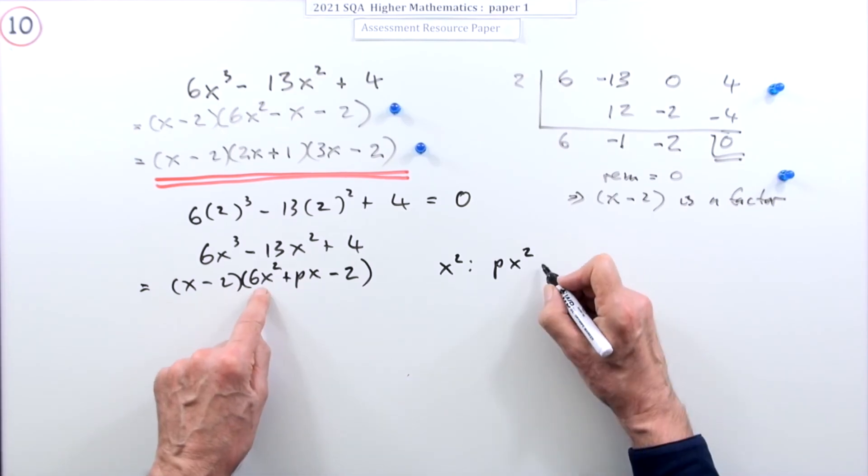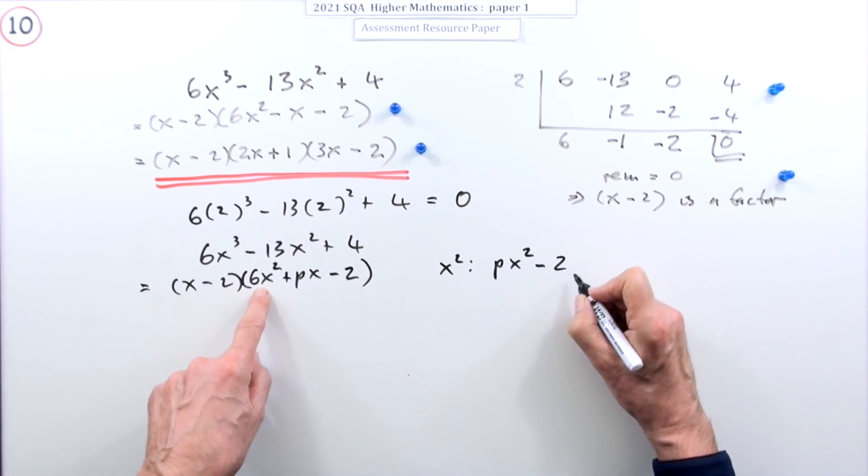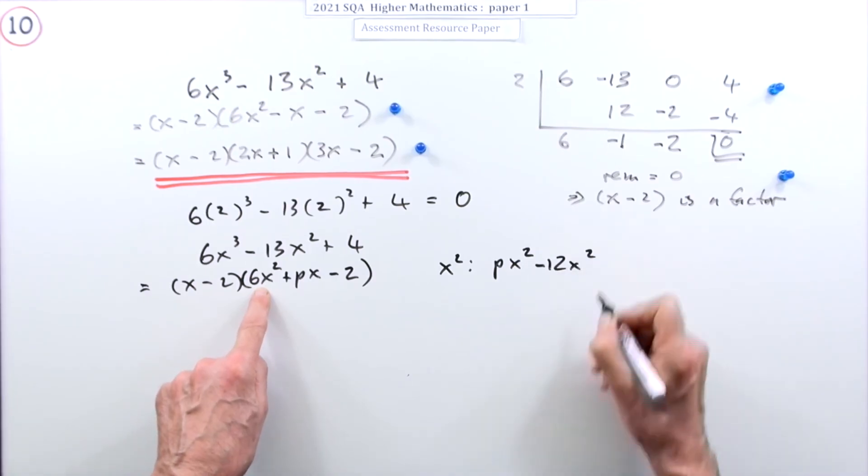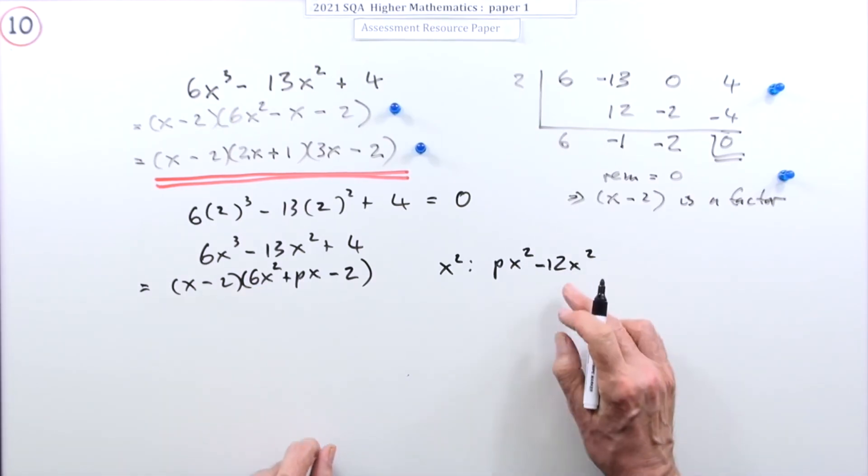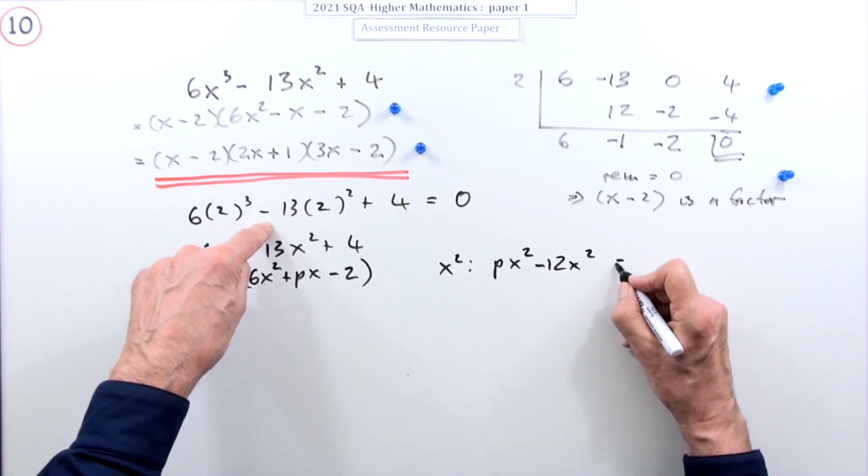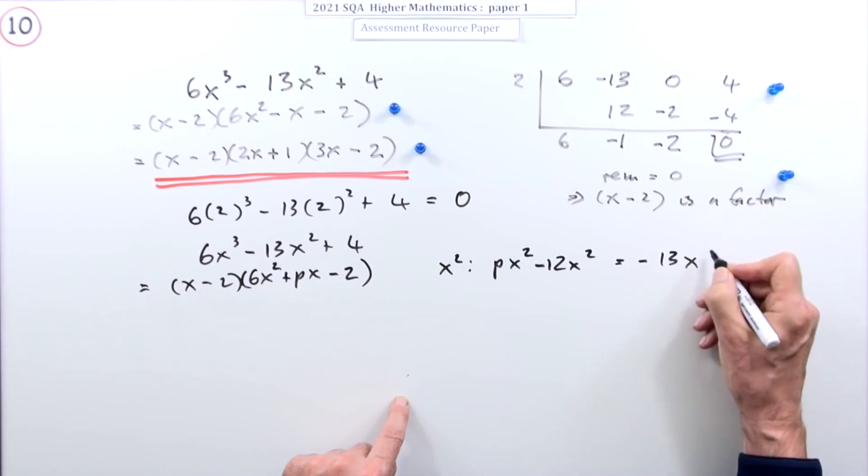Those are the two combinations that would give me an x² and that should come to negative 13x². Of course you didn't need to write in the x², you could just have said p minus 12 equals negative 13, which is what I'm just going to do in this bit here.